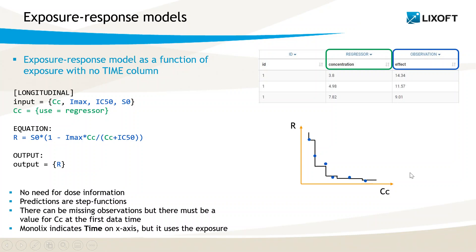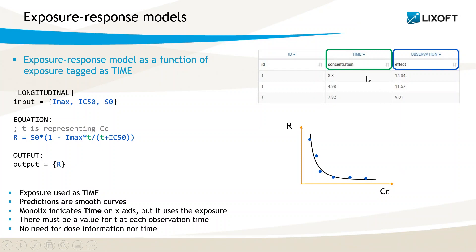There is another configuration that allows getting smooth predictions instead of piecewise constants for the exposure-response curves. To this end, the column with the exposure values should be tagged as time instead of as regressor. The same structural model as before can be used, except that the exposure — in this example the concentration — should be called T instead of CC. This allows Monolix to read the concentration values from the data and use them for T. Since time is assumed to be continuous by Monolix, the predictions are smooth exposure-to-response curves. The labels for the x-axis are still called time by default but can be changed in the interface.